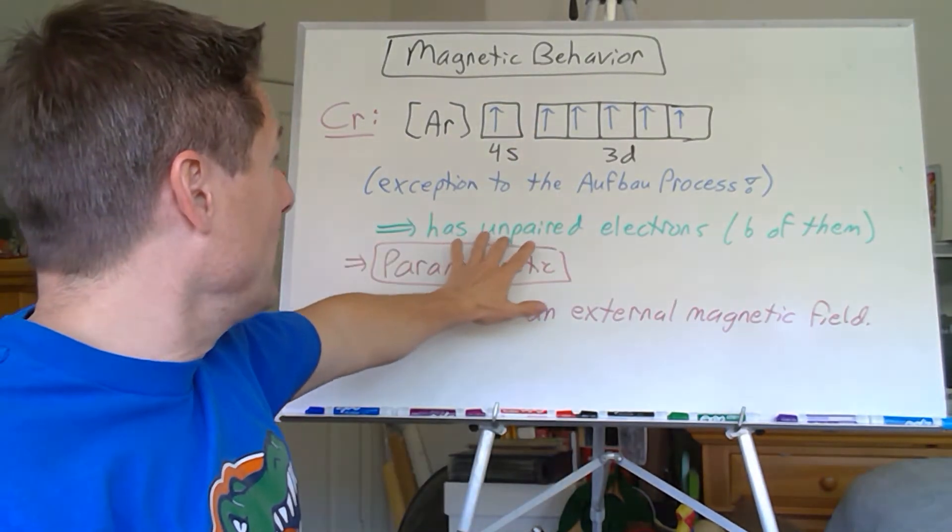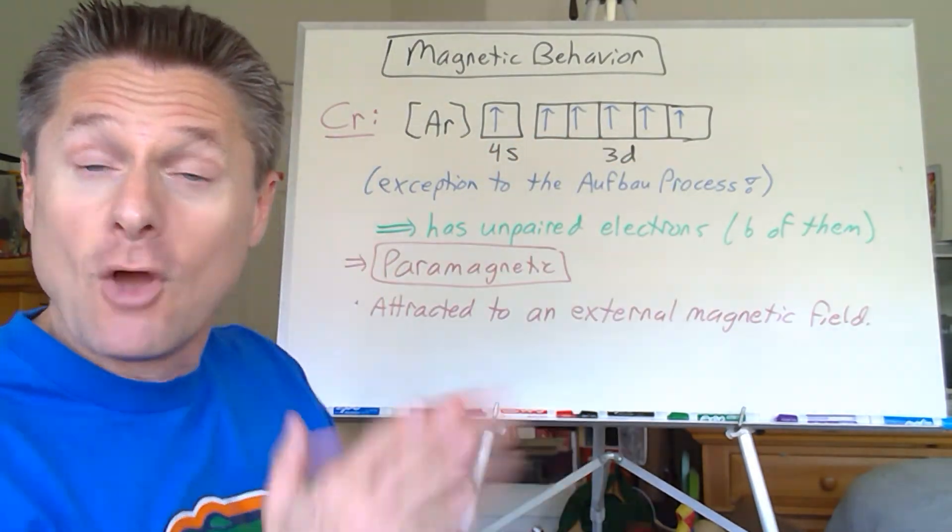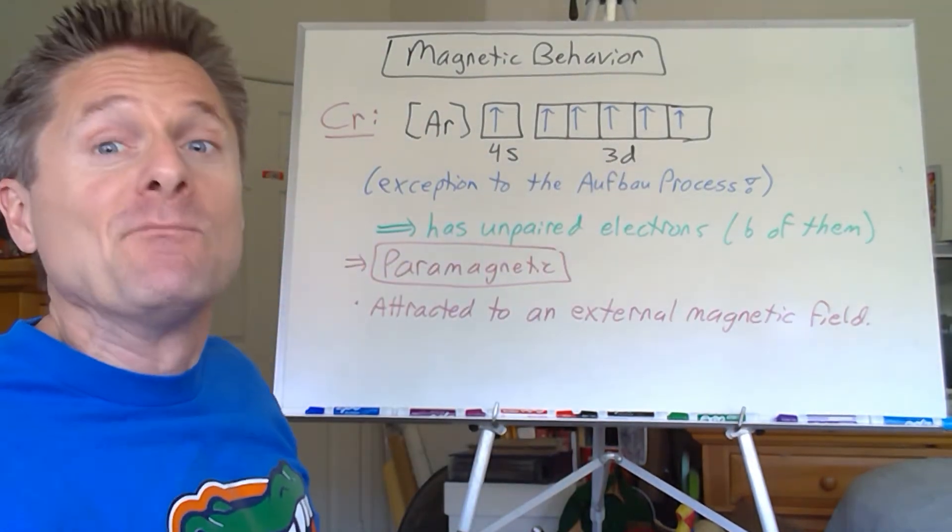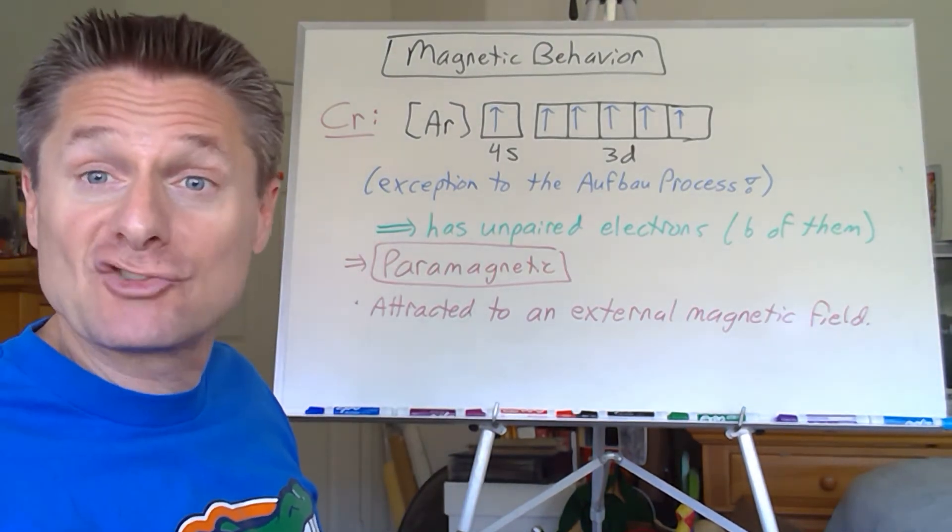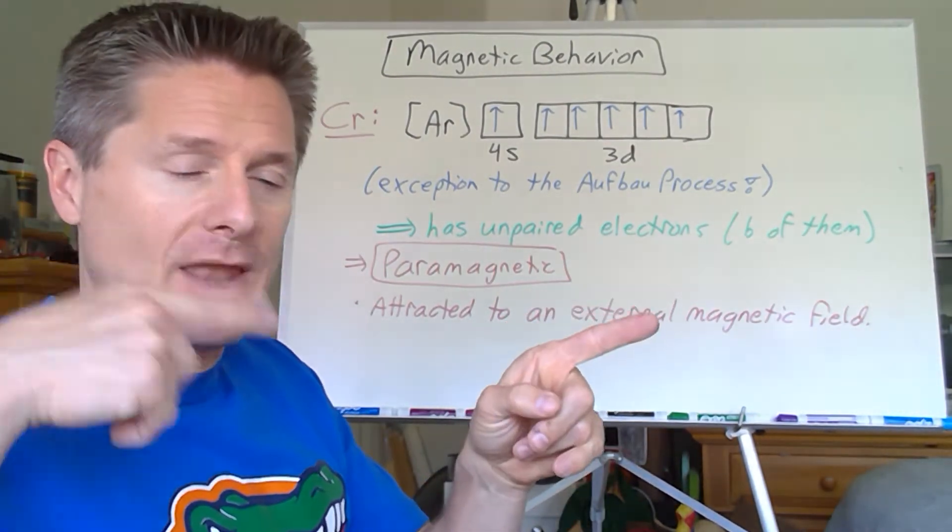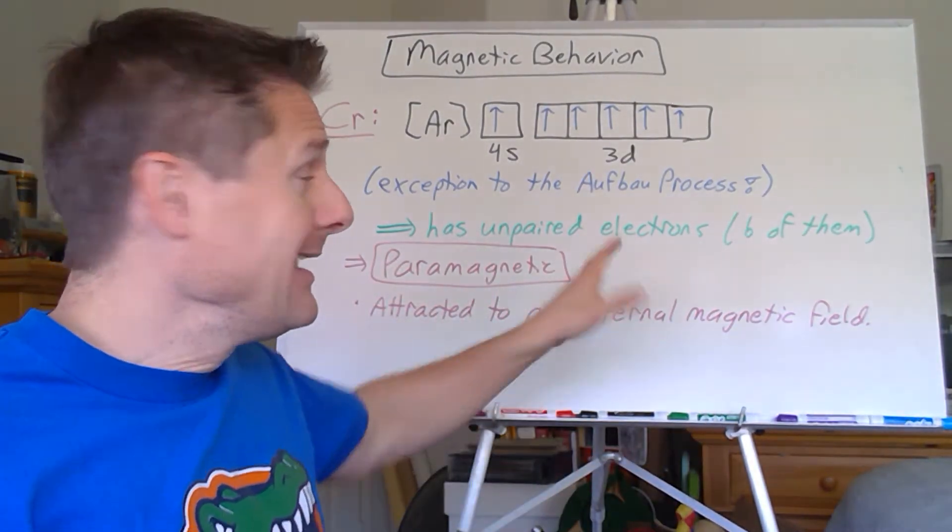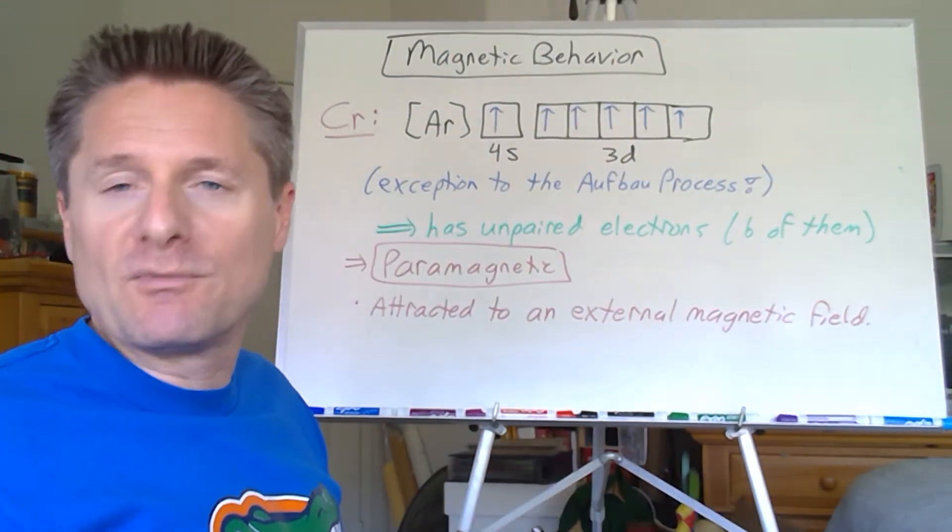Based on this, we have 1, 2, 3, 4, 5, 6 unpaired electrons. That's going to be very, very paramagnetic. With 6 unpaired electrons, that's going to be pretty dramatic and attracted to an external magnetic field. All the electron magnetic poles line up with the external field. When you take that external magnetic field away, it goes back to what it was before.